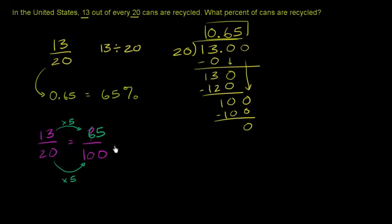And so you'd get 65 over 100, which is the same thing as 65 per, let me write this percent symbol, 65%. And just a reminder, percent literally means per 100, 65 per 100, 65%.